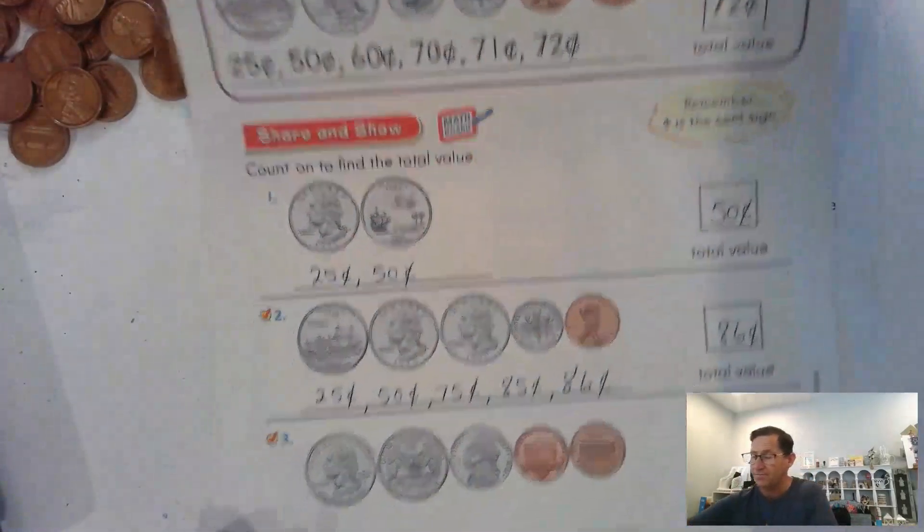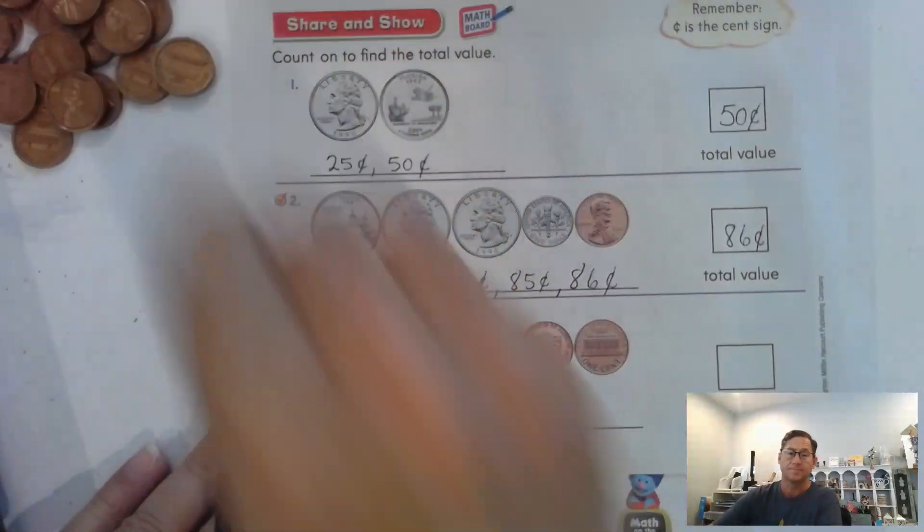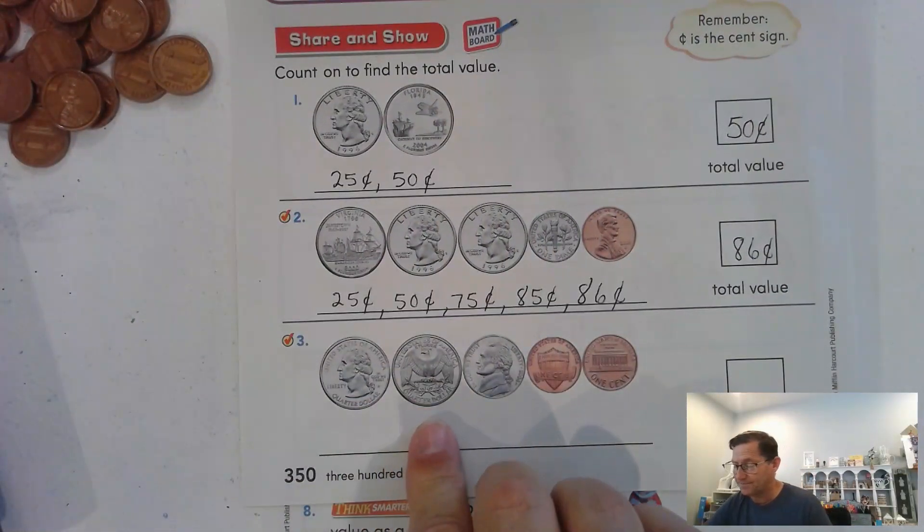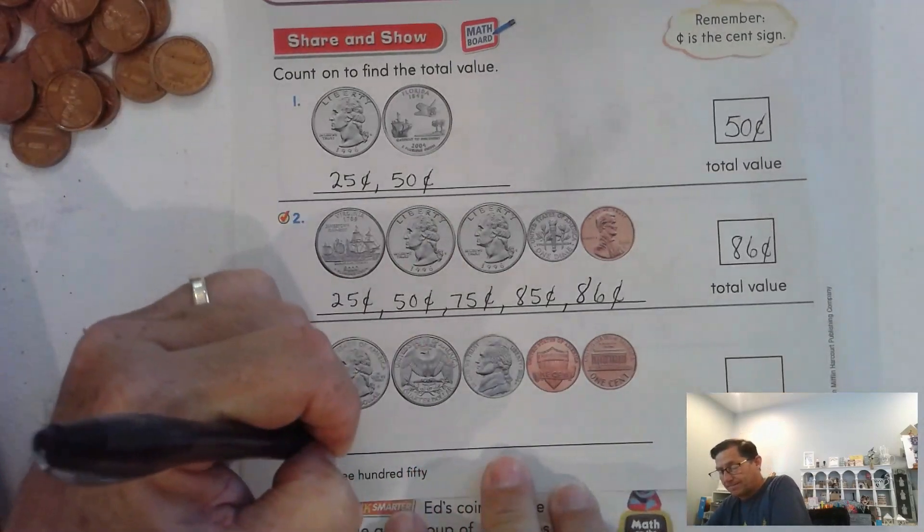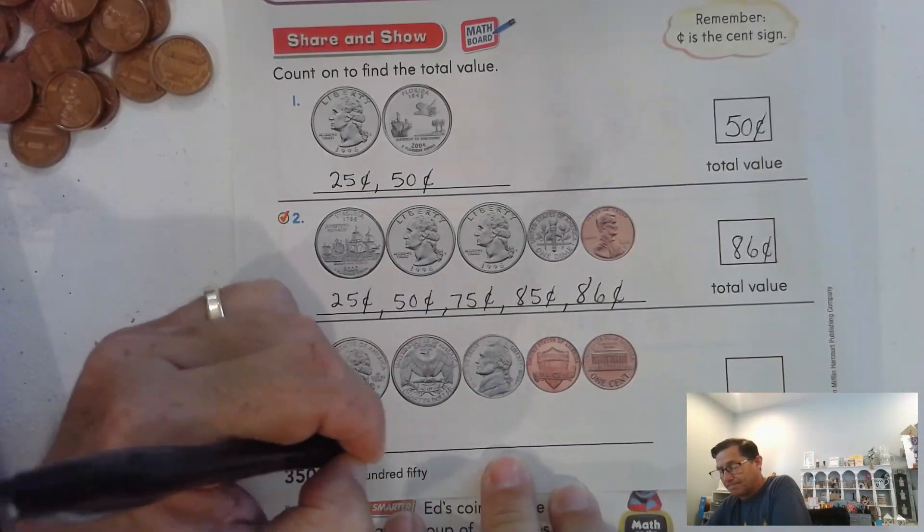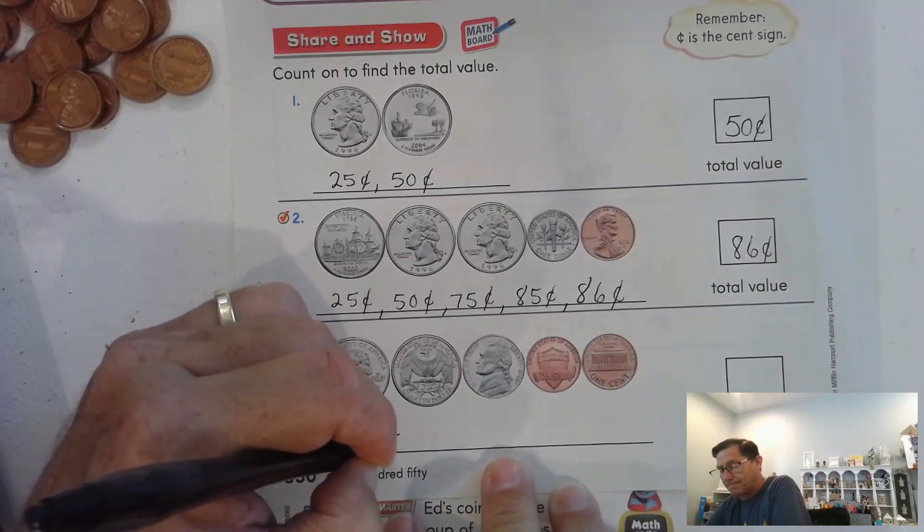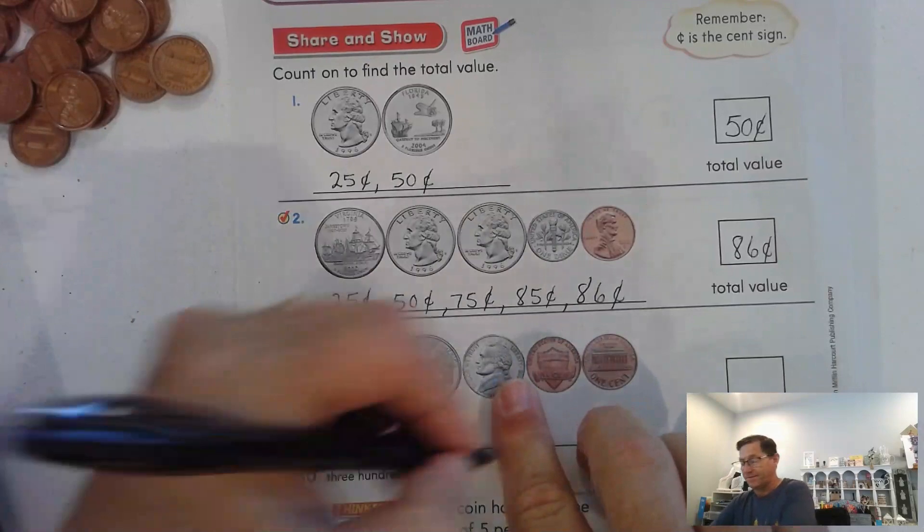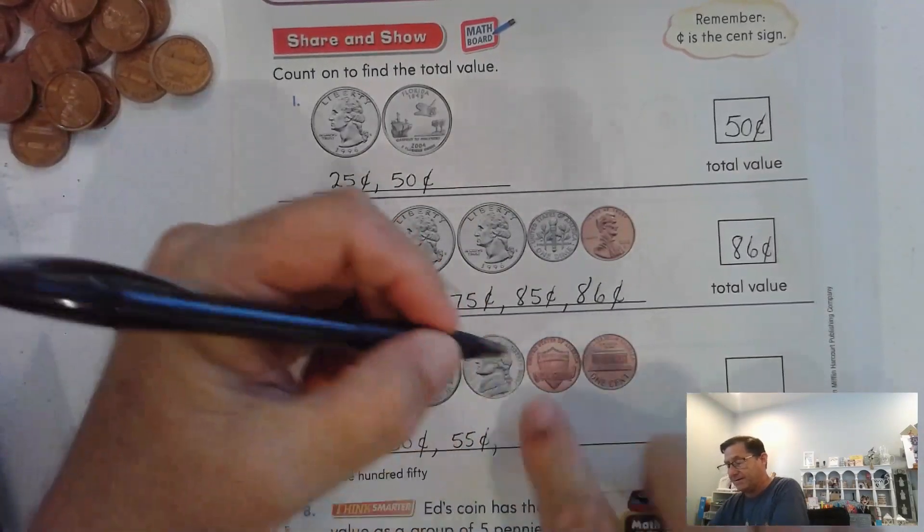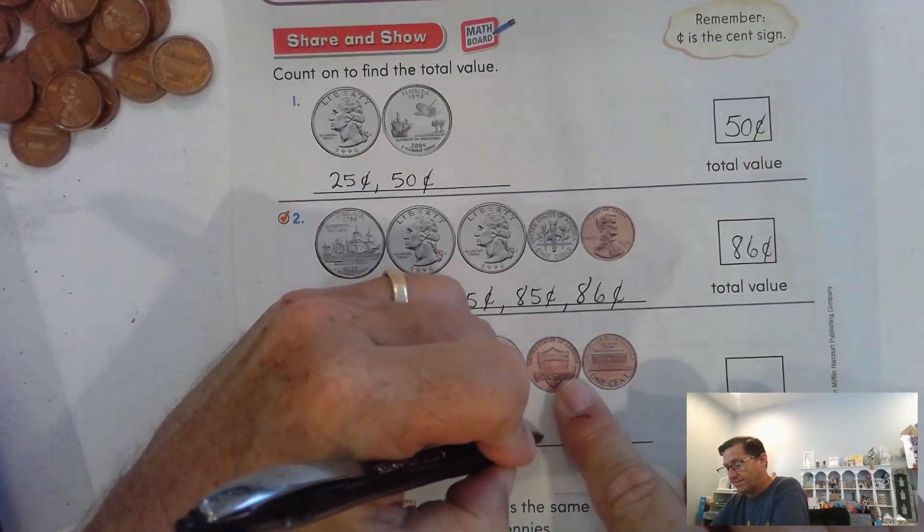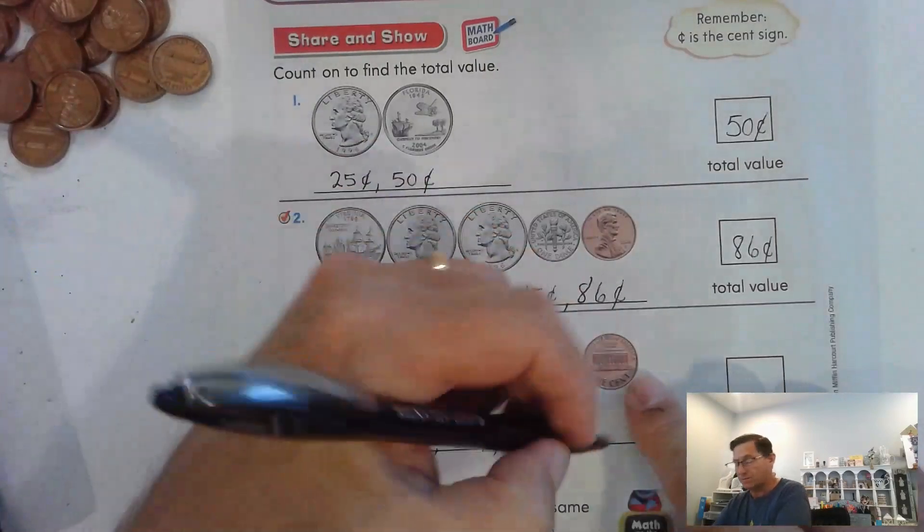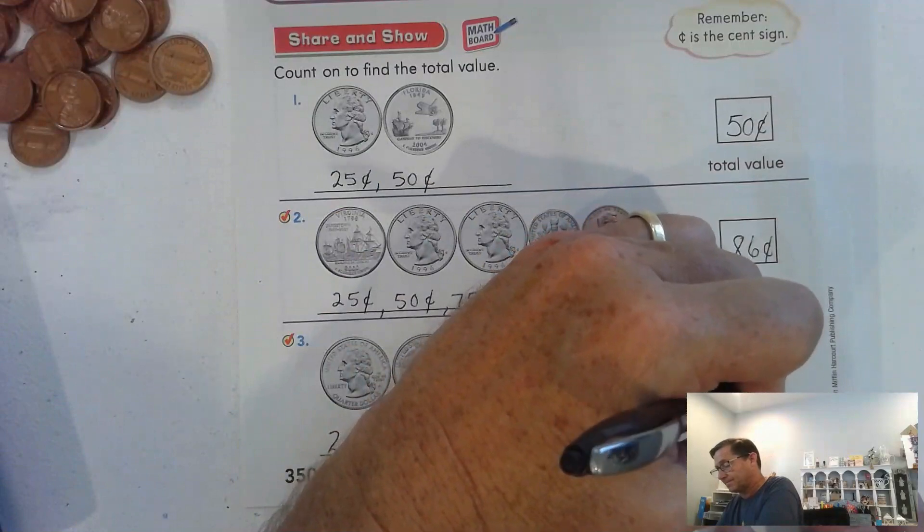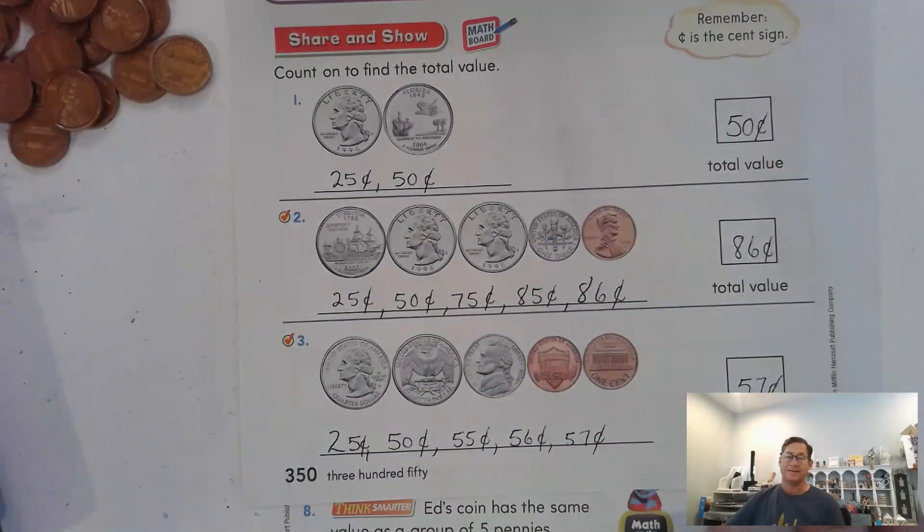So again, start with the largest value and count on. Here we have 25 cents and 50, 50 cents. 50 plus 5, 55. 55 plus 1, 56. 56 plus 1, 57. 57 cents.